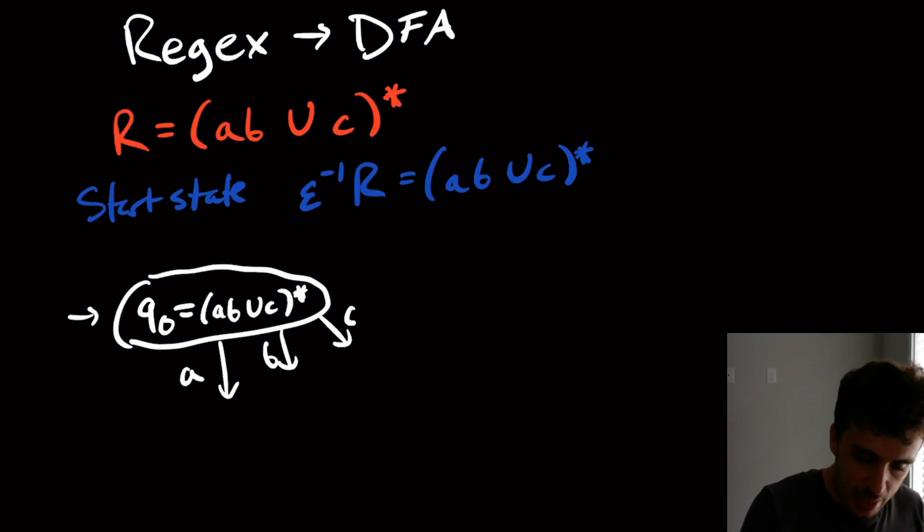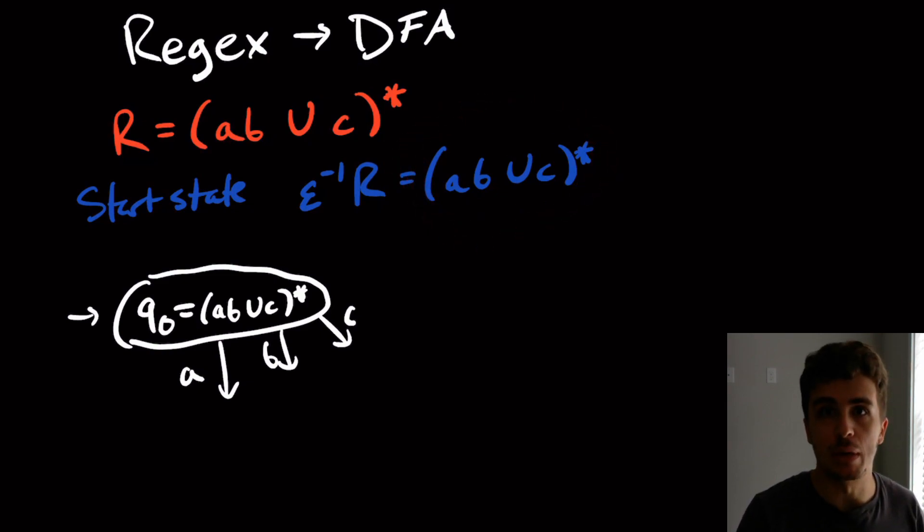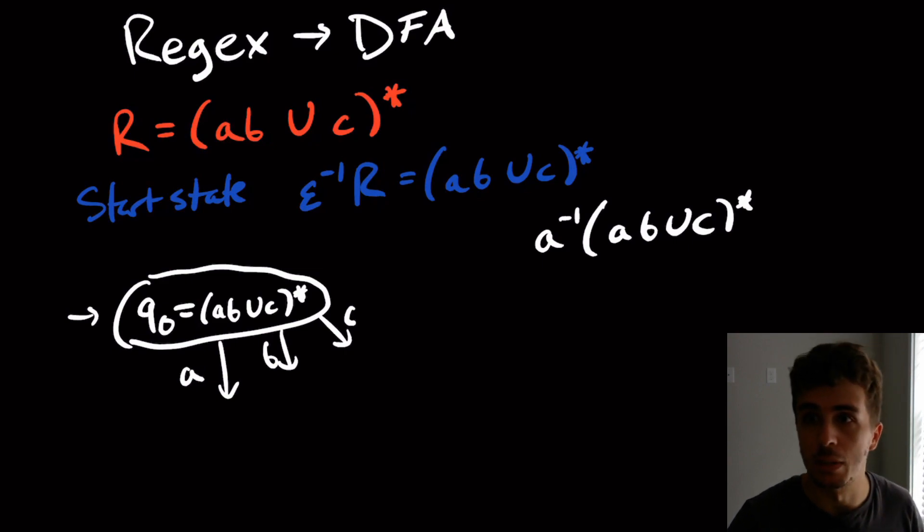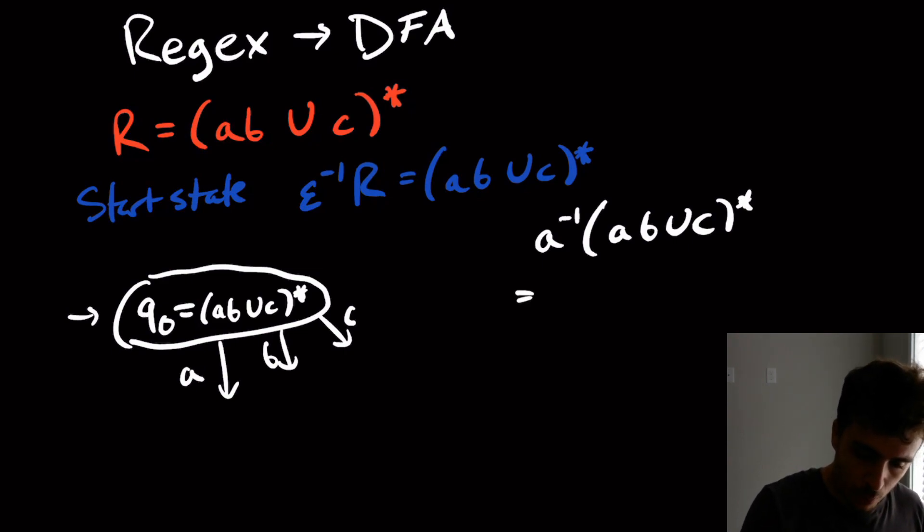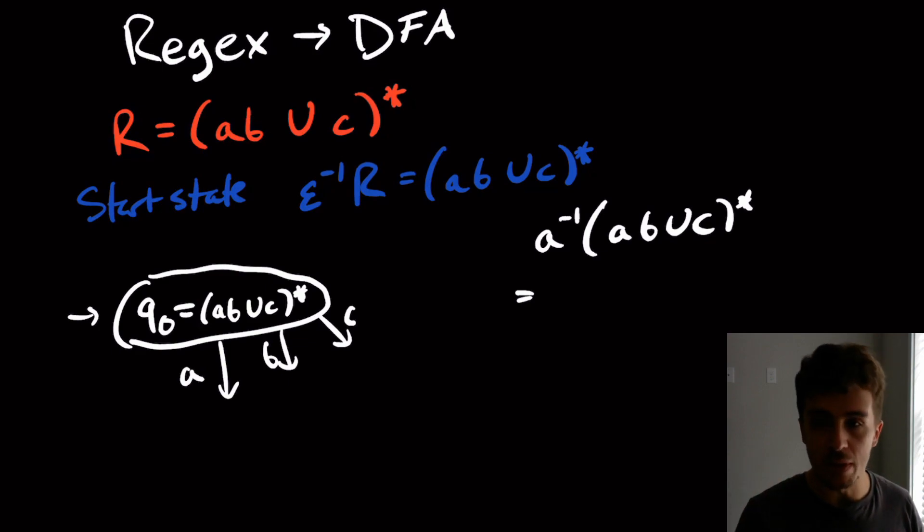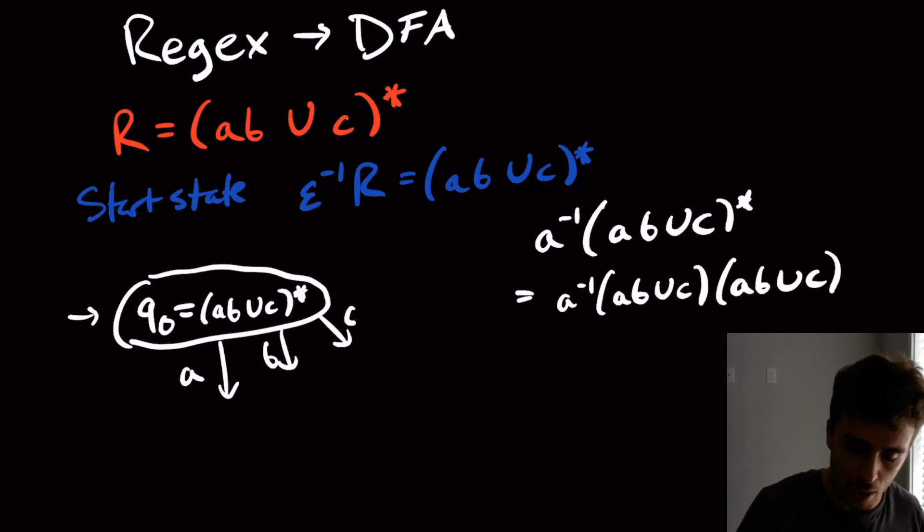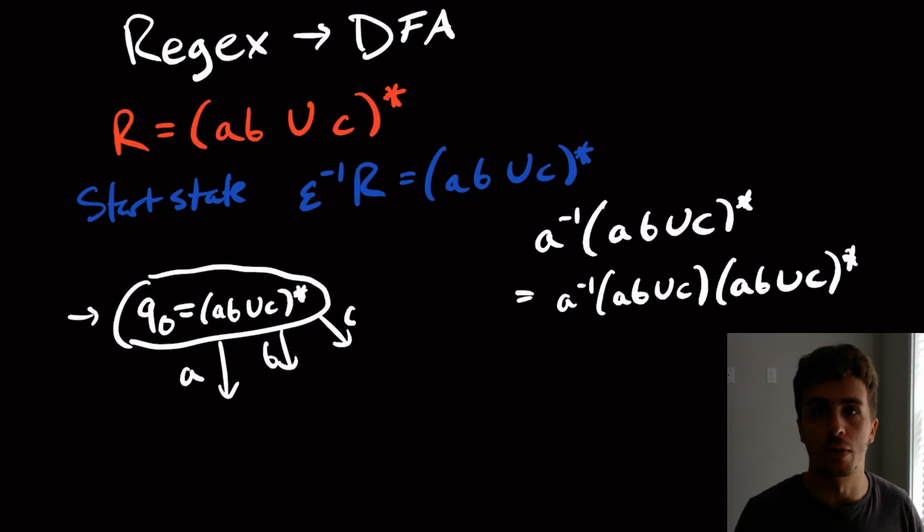What we can do is let's take partial derivatives of this state of this regex with respect to A, B, and C. If I do the derivative with respect to A of AB union C star, let me just make sure it shows up. So what is this? Well, remember that when you take the derivative of something starred, the result is going to be the derivative of one version of this without the star and then with the star again.